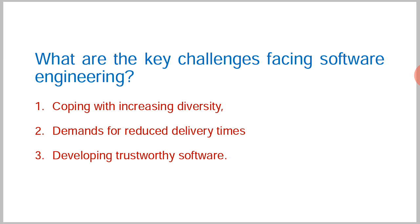For example, if you want software and approach one company that says it will take one year, but another company says they can deliver within six months, you will automatically approach the second company because their delivery time is much less. So one company loses the customer. That is why, in this competitive world, delivering software in a very quick time is a big challenge.